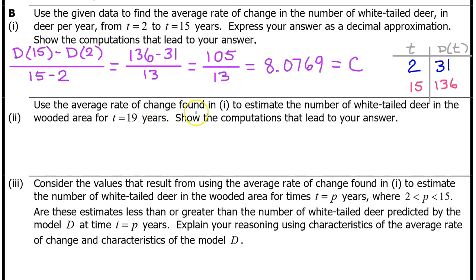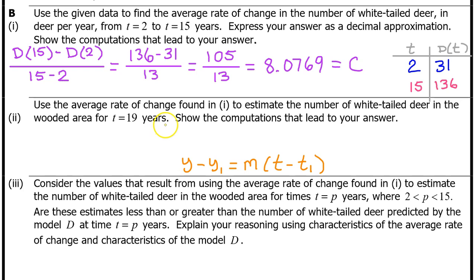Part B2: Use the average rate of change found in Part 1 to estimate the number of white-tailed deer for t equals 19 years. They are indirectly asking us to write the equation of the secant line through the two input-output pairs used in Part 1, then use that secant line to estimate the deer count at t equals 19. We'll use point-slope form, where t1 and y1 are one of the input-output pairs and m is the slope — the average rate of change, which is c. I'll use 2 comma 31 because smaller numbers are easier.